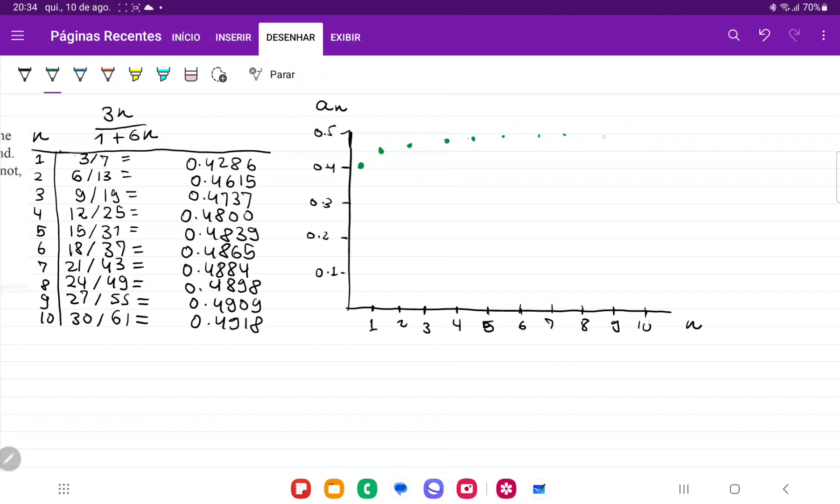For number 9, we have 0.49, so nearly almost at 0.5, so nearly here. And for number 10, also nearly there. So I had to draw smaller and smaller dots so that we could see where they were heading to.